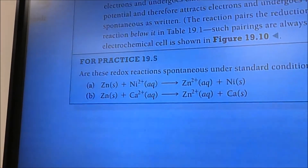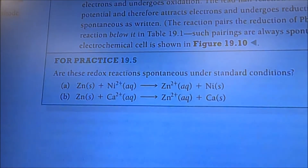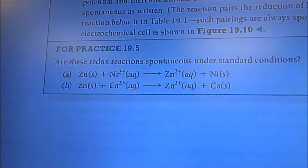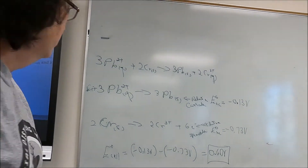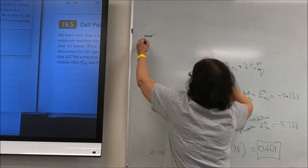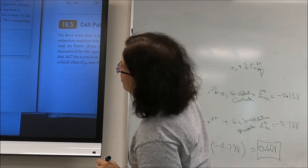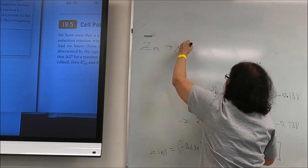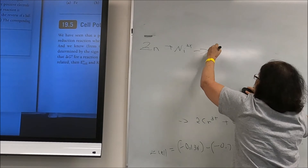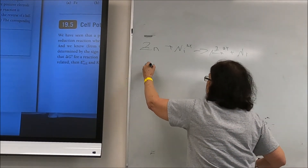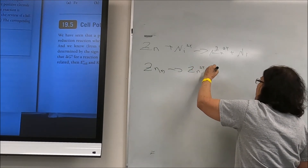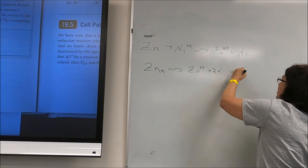Now for problem 19.5, we're given two reactions: Zn + Ni²⁺ → Zn²⁺ + Ni, and Zn + Ca²⁺ → Zn²⁺ + Ca. The question is whether these redox reactions are spontaneous under standard conditions. For the first reaction, the oxidation half reaction is Zn → Zn²⁺ + 2e⁻ (anode), and the reduction is Ni²⁺ + 2e⁻ → Ni (cathode).